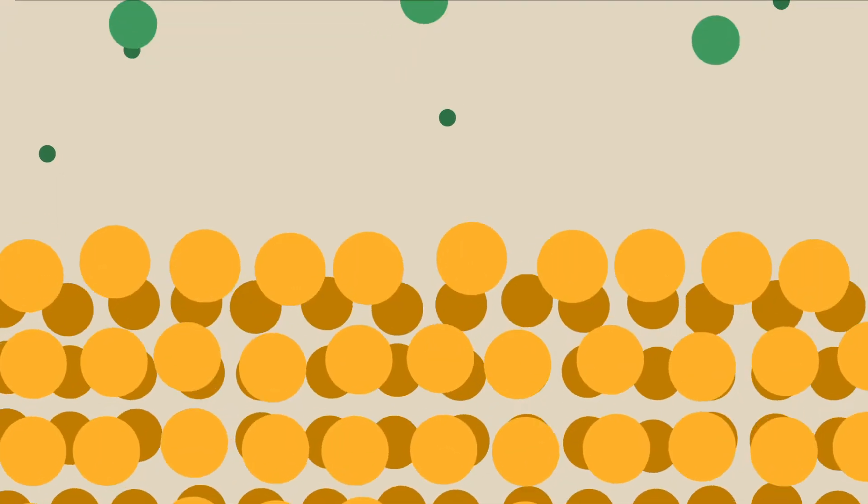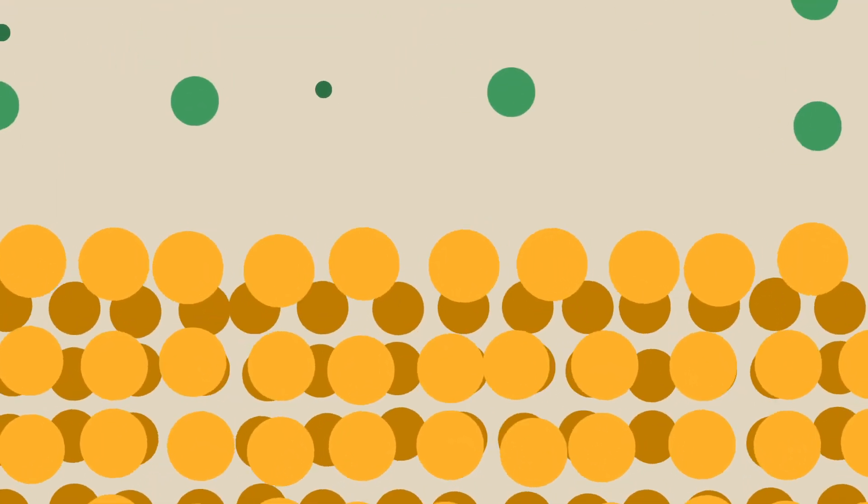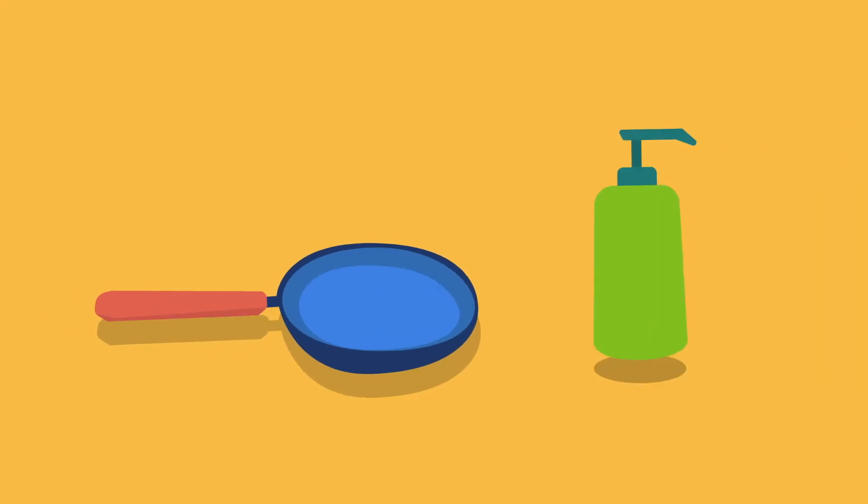In this video, we will see that atoms and molecules behave differently at interfaces than in the bulk of materials. This can be exploited to modify material behaviour.